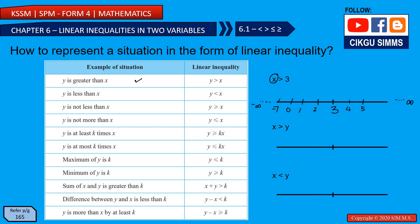If x is greater than 3, I put a circle at 3 and draw to the right side, because it's greater than. My x can be 4, 5, 3.5, 4.5 — any number on that line. I do not shade this circle. I'll tell you about the shaded circle shortly. And if x is greater than y, it's the same idea but with y replacing the number 3.